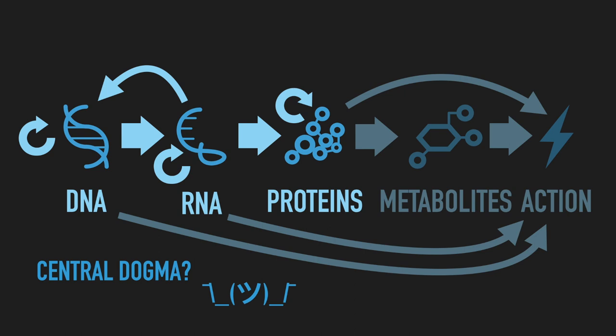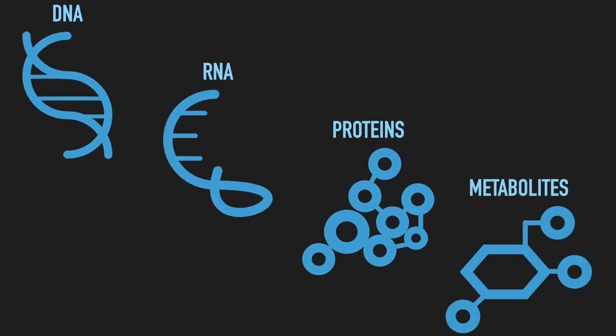The centrality of information to molecular biology is of note, because it establishes the deep interconnection with information and data sciences that we will explore during this course. Now, let's focus on these four groups of molecules: DNA, RNA, proteins, and metabolites. How do we currently study collections of these molecules in high throughput in what are called the omics sciences?